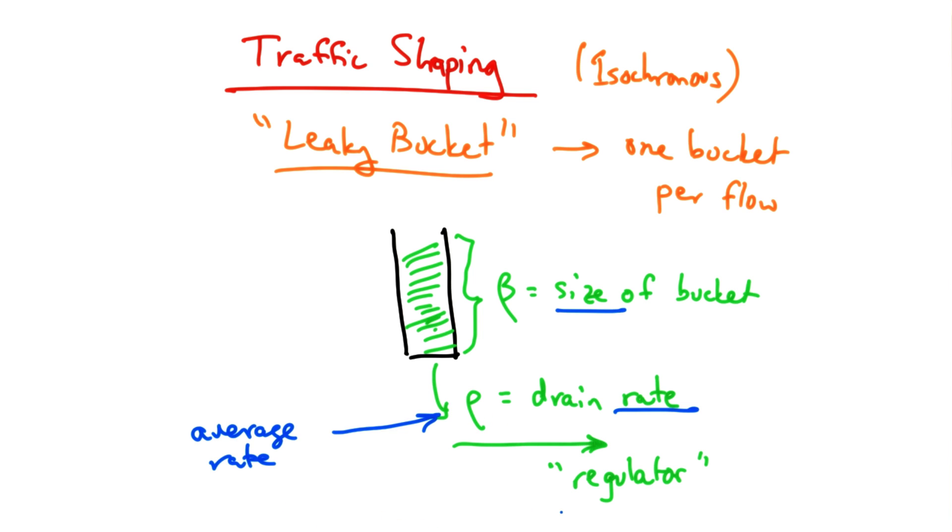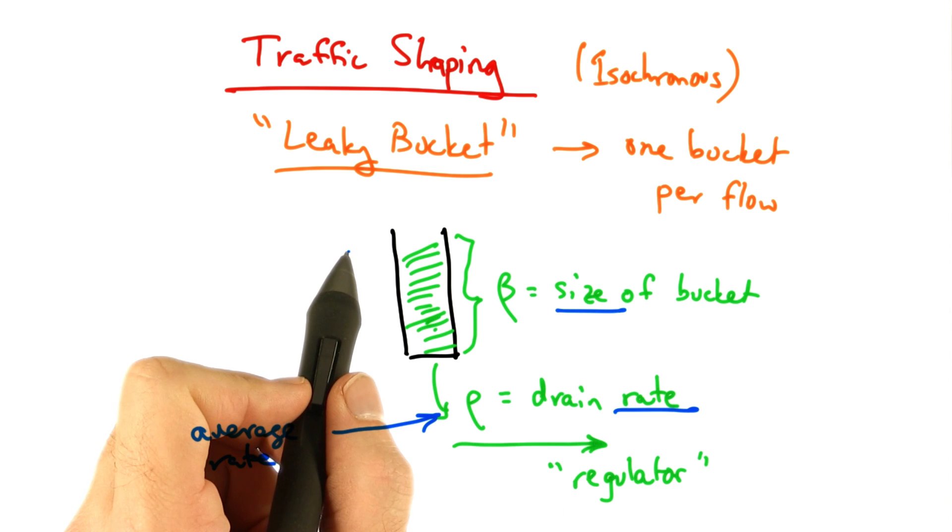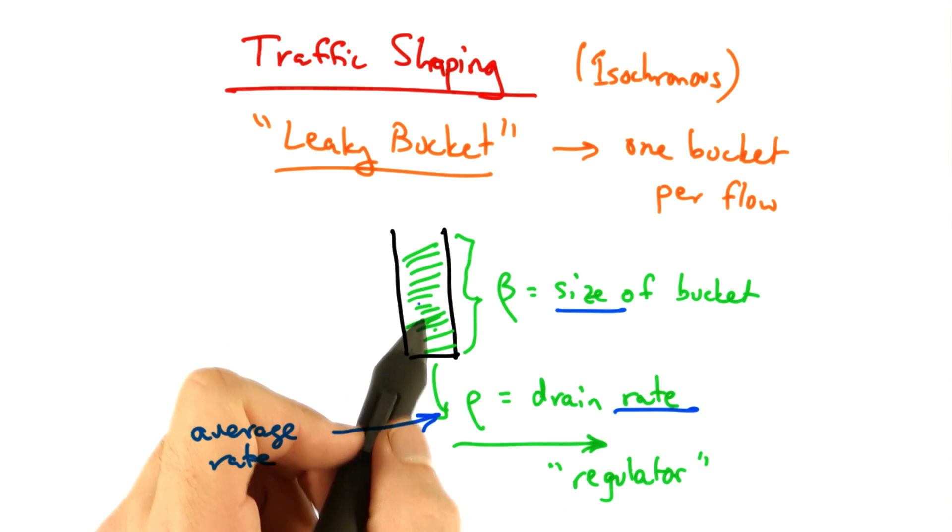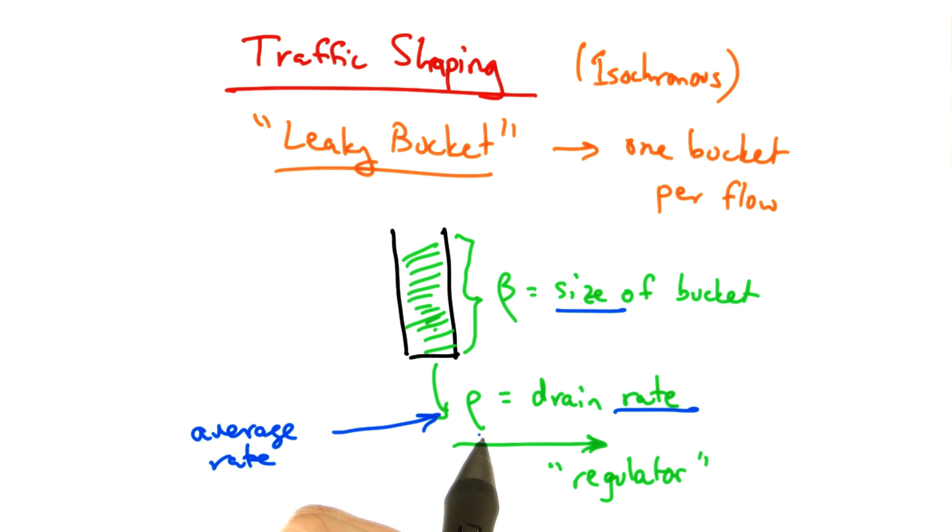The parameter rho controls the average rate. Data can arrive faster or slower into the bucket, but it cannot drain at a rate faster than rho. Therefore, the maximum average rate that traffic can be sent is this smooth rate rho.